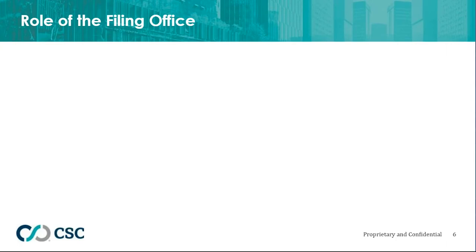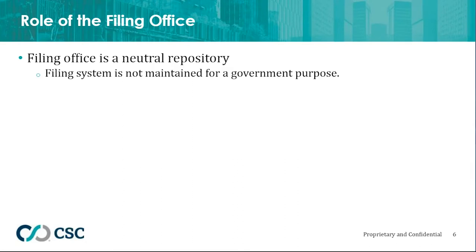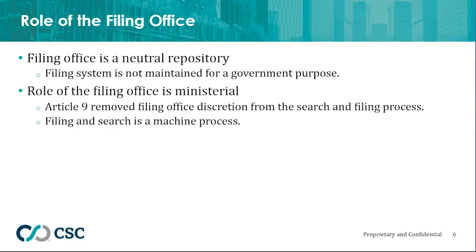The filing office plays a central role, and it's important to understand that role — which is actually a lot less than many people realize. The filing office is intended to be a neutral repository for these notices of private agreements. These things aren't filed for a government purpose; the government is just the neutral party that holds them for public inspection. Because they're not for a government purpose, the role of the filing office is quite limited. The duties of the filing office are purely ministerial — Article 9 does not allow them to exercise judgment or discretion. It's designed to operate as a computer process — electronic filing, computer searching — without human judgment.